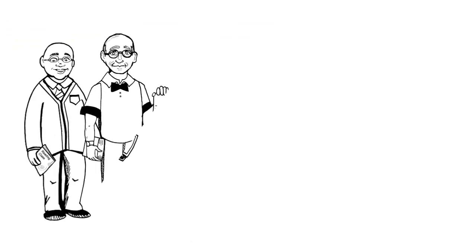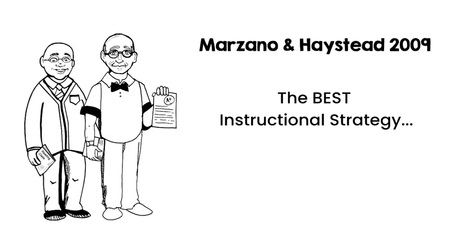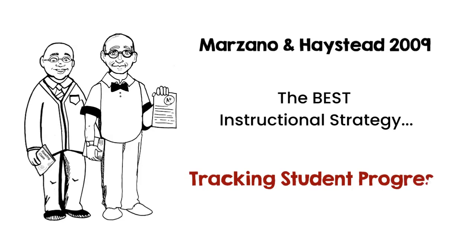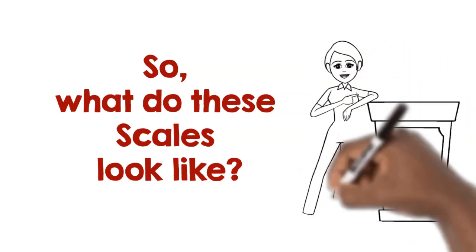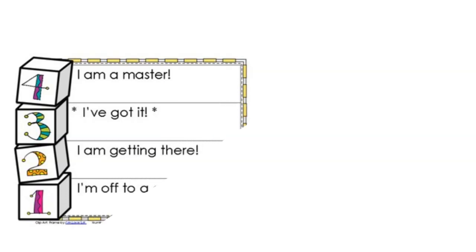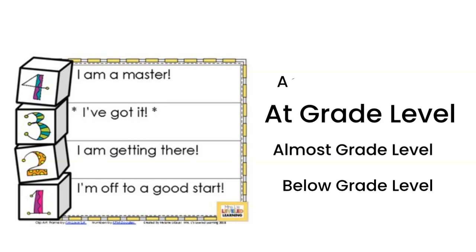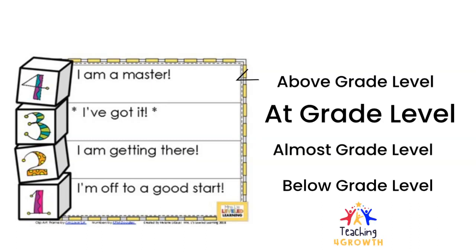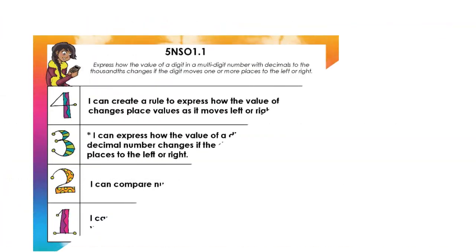Back in 2009, Marzano and Haystead compiled a synthesis of studies on instructional strategies. The instructional strategy that produced the highest gains in student performance was tracking student progress on a scale. Scales are a continuum of skills and content from easiest to hardest — a specific framework to break down learning standards into levels of difficulty. This creates a logical sequence of steps toward mastery and beyond. Now students have multiple entry points to connect with content, and teachers can assess students before and after instruction to track growth.